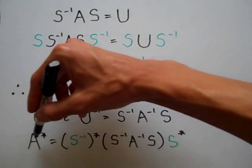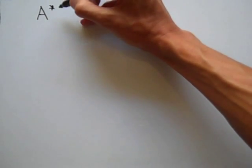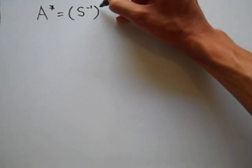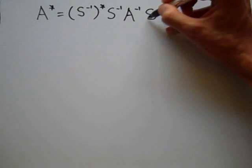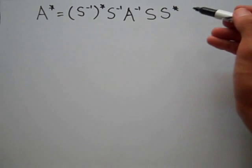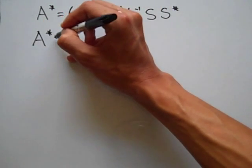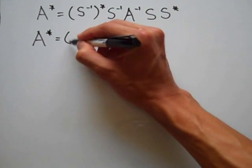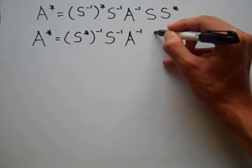I'm going to do some regrouping here. A star is equal to S inverse star times S inverse times A inverse times S times S star. The star and the inverse can switch positions, so S inverse star becomes S star inverse. So: S star inverse times S inverse times A inverse times S times S star.